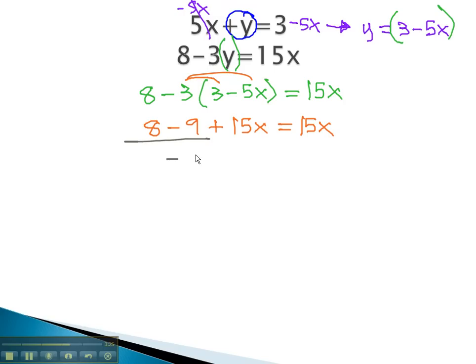Combining like terms, 8 minus 9 is negative 1 plus 15x equals 15x. Again, as we solve, we want the variable all on one side. We'll subtract 15x from both sides.